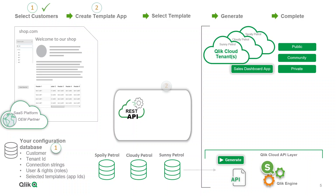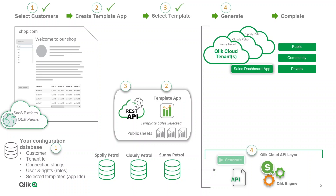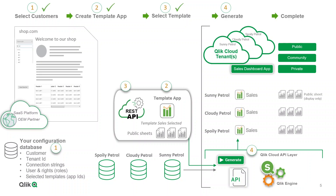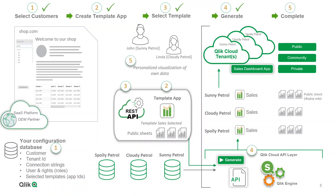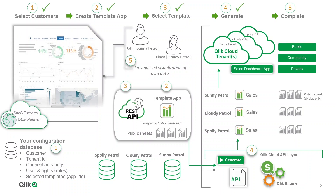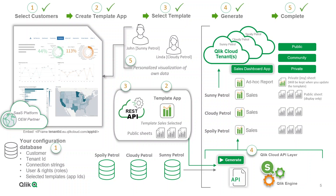Your software is now in control — it selects the template apps that need to be copied to each customer tenant. In the demo platform, we simulate this by pressing the generate button. This button will execute the activities by making use of the REST and WebSocket-based APIs. It then creates a customer-specific tenant, copies, reloads, and publishes the app into a managed space. Our end customer users, John and Linda, will get a personalized dashboard which shows only the data they are authorized and allowed to see.